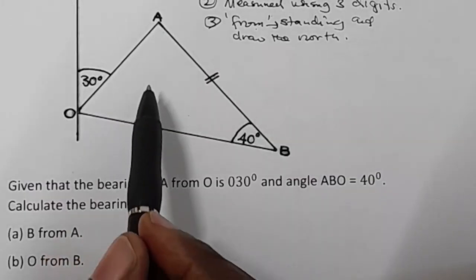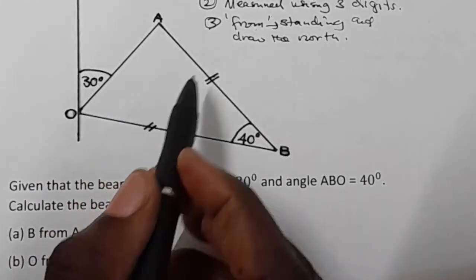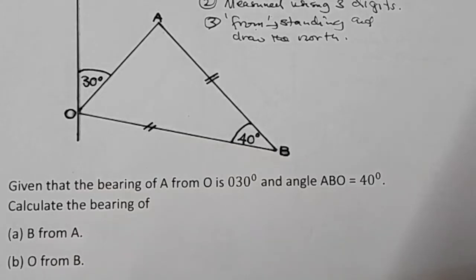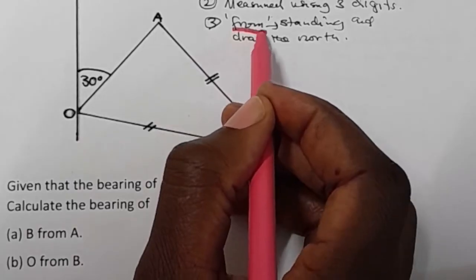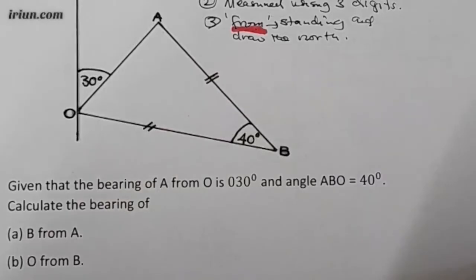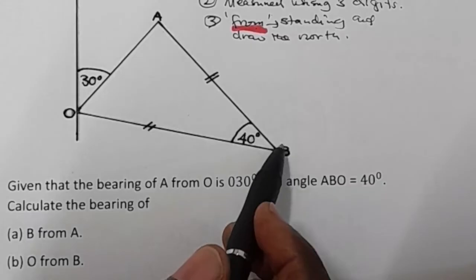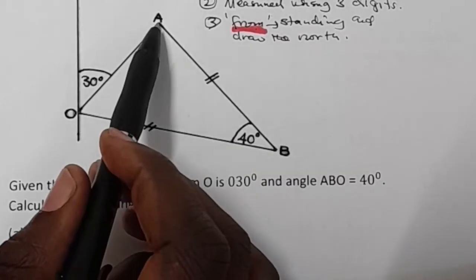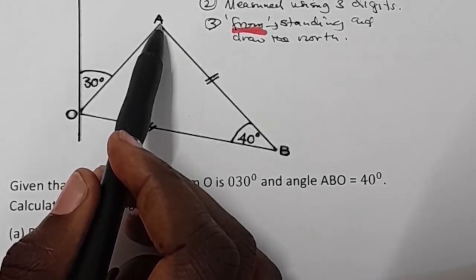They want you to find the bearing of B from A. The word 'from' in bearing is very important — it tells you where you are standing and where you are supposed to draw the north. When they say find the bearing of B from A, they want you to find the bearing of B whilst standing at A. So where you are standing, you are supposed to draw the north.